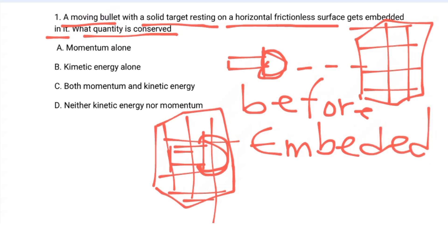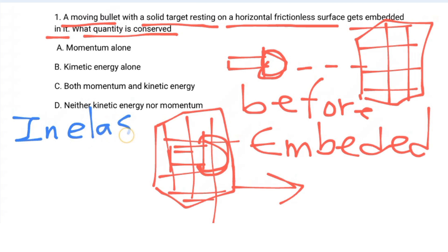So if they are embedded like this, now what we are going to find is the quantity conserved. You know, we need to identify the collision type — because if it's not elastic, kinetic energy is not conserved. In an inelastic collision, kinetic energy is not conserved, but momentum is conserved.